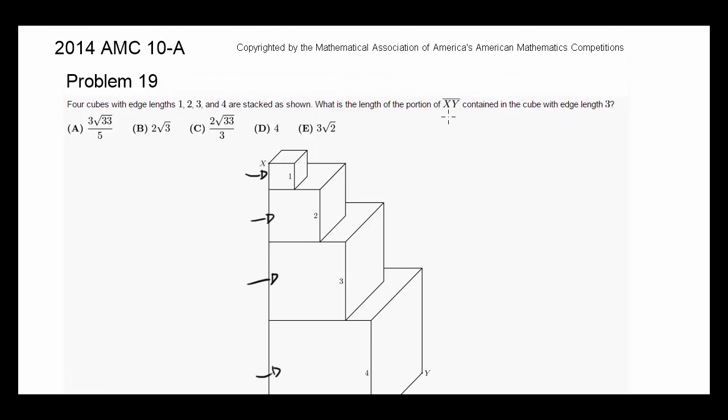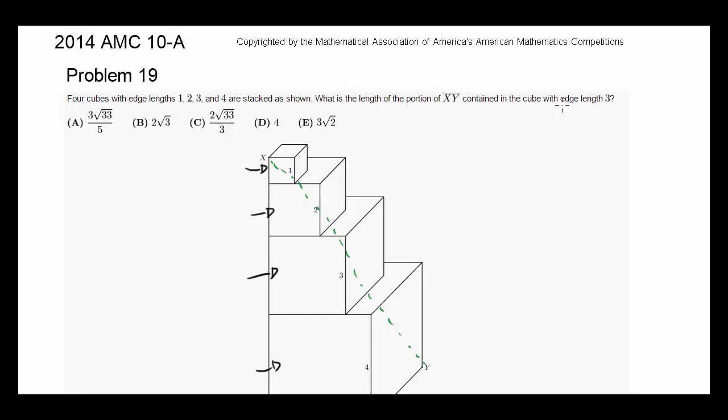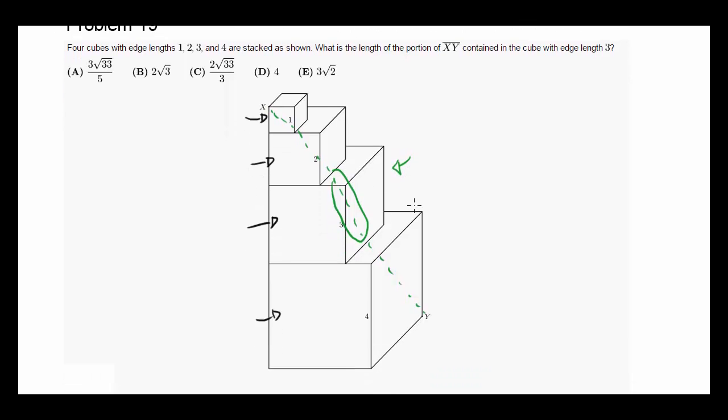What is the length of the portion XY? Now XY is the one that's going through the cube, going through the cube like a diagonal, something like this. It's contained in the cube with edge length 3. And you want to find the portion contained in the cube with edge length 3, or this cube. How can we do that?